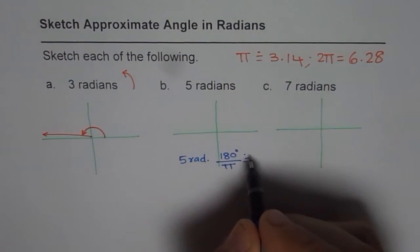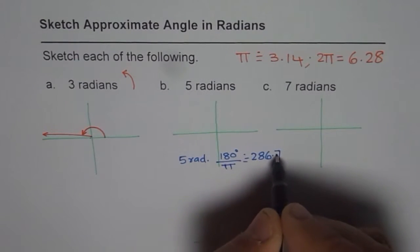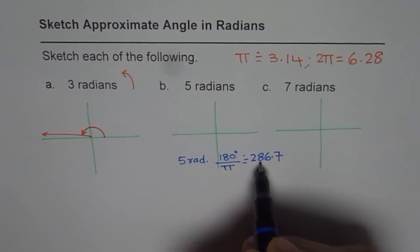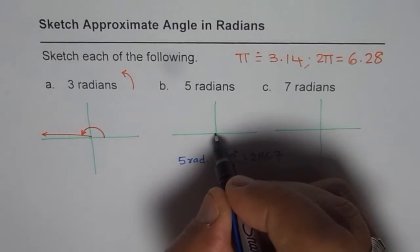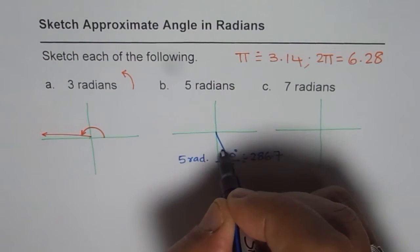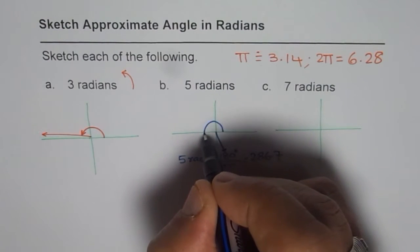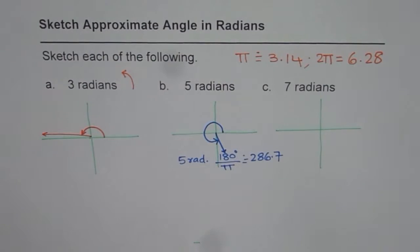So this is approximately 286.7. That means it is more than 270 by around 17 degrees, right. So that means the angle here will be approximately 5 radians. So this angle counterclockwise is 5 radians.